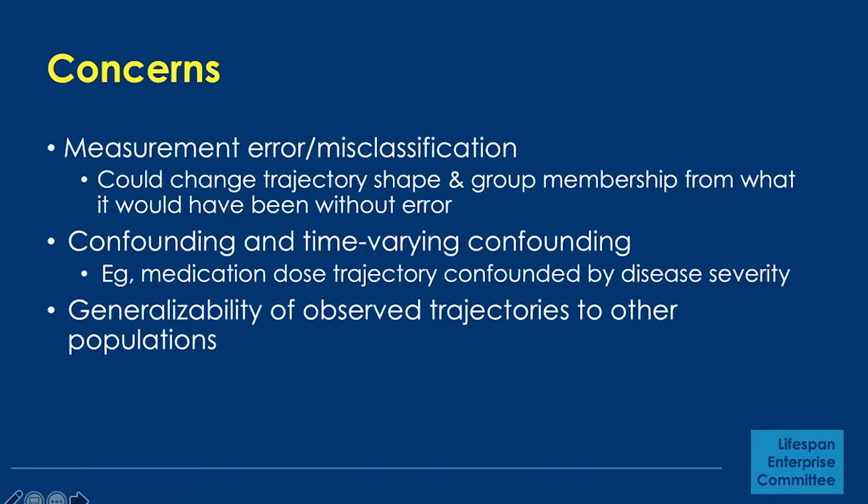I want to briefly touch on some concerns when using trajectory analysis. This doesn't give us a pass on typical concerns about bias. Measurement error can be a concern and could change trajectory shape and group membership from what it would have been without error. Confounding and time-varying confounding can be a really big concern — for example, medication dose trajectories being confounded by disease severity, since changes in medication dose would be caused by changes in disease severity, which could also be related to an outcome under study.